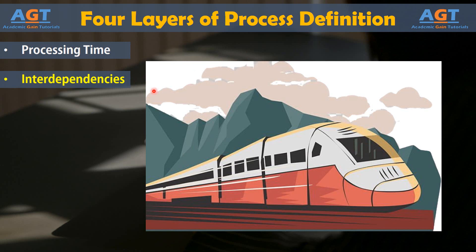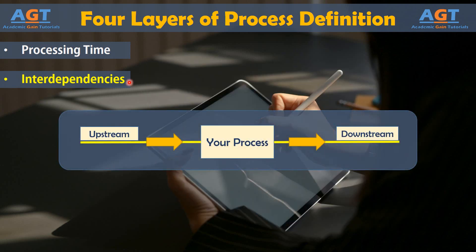The train leaves station A with passengers, carrying them to station B. Before the train can leave, the engineer must be on board and prepared to operate the machine. Safety checks, clearance from the rail yard, the closing of all the doors — these are all processes that must be completed before the train leaves the station. The process of the train transporting passengers is dependent upon the completion of other processes.